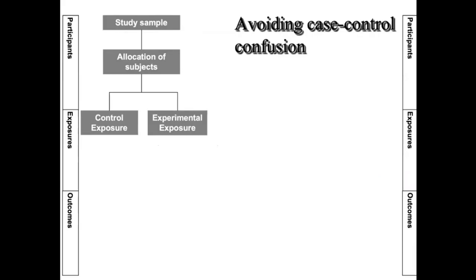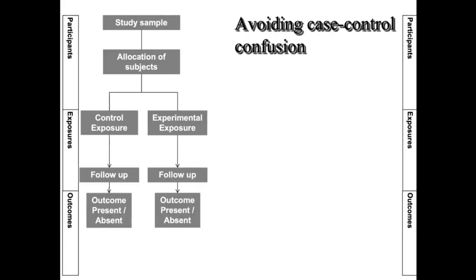We frequently hear the terms cohort and case-control study. In a cohort study, we take people, follow them up, and measure their exposure to something — whether they are smoking or not smoking — then follow them up to see whether they develop cancer or not. With that information, we can determine whether cancer is related to exposure to smoking. This study moves forward in time and is called a cohort study.